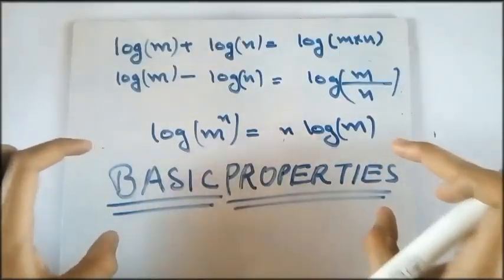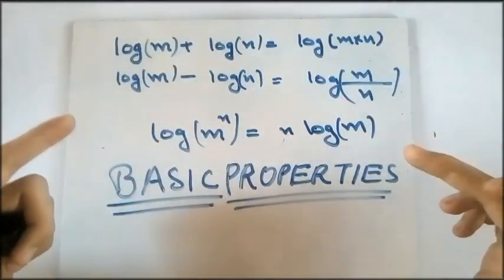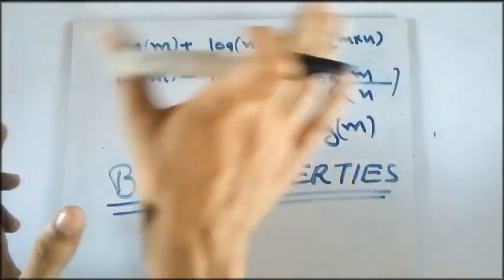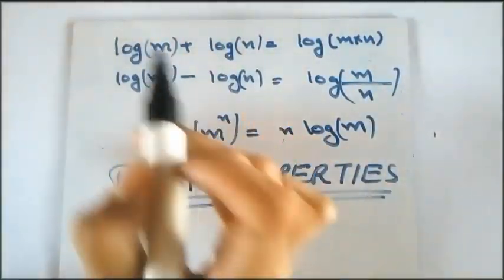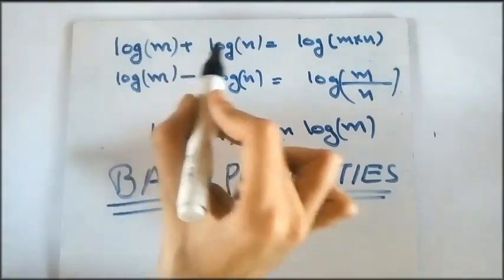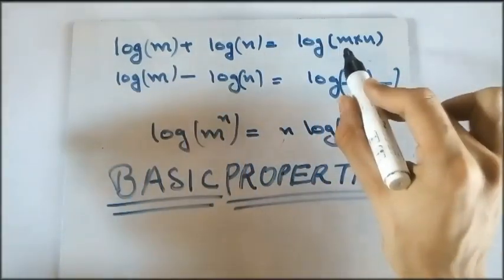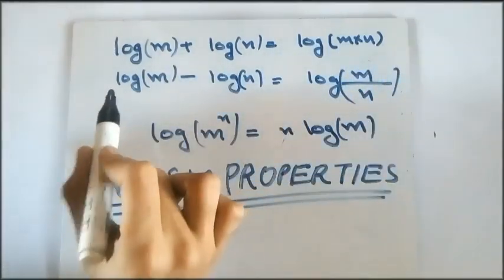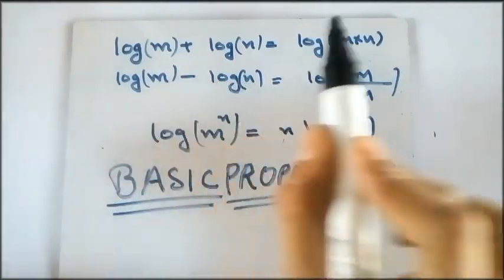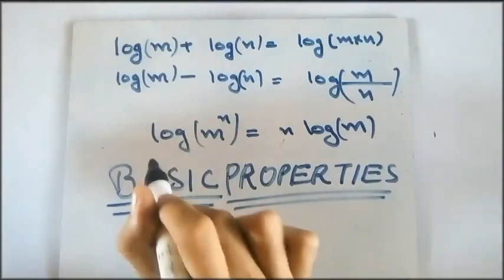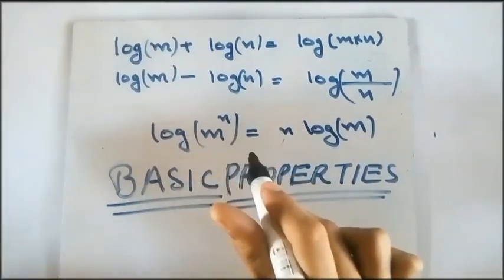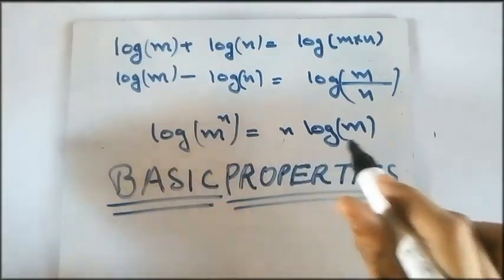Okay, so let's look at some of the basic properties of logarithms. These properties are also the formulas of logarithm and they are very important. So, log M plus log N is equal to log M multiplied by N. Log M minus log N is equal to log M divided by N. Log M raised to the power N is equal to N log M.